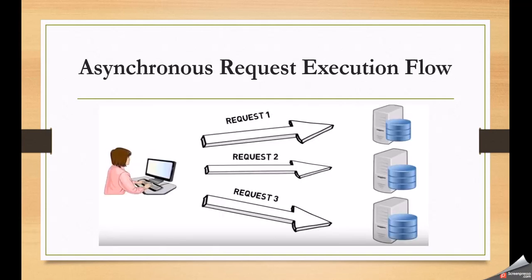Let us see the execution flow for an asynchronous request. The client sends request 1 and does not need to wait for the response — he can send request 2 immediately, then request 3 as well. He does not need to wait for the responses from the server. This is an asynchronous request — the browser will be responsive. When the client sends asynchronous requests the browser is not blocked, whereas if the client sends synchronous requests the browser will be blocked.